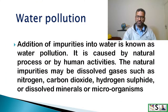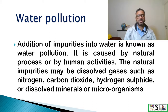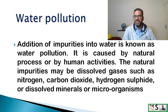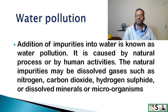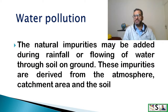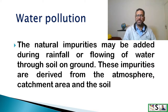Water pollution. First, we will discuss water pollution and then the hazards of pollution that result in waterborne diseases. Addition of impurities into water is known as water pollution. It is caused by natural processes or by human activities. Natural impurities may be dissolved gases such as nitrogen, carbon dioxide, hydrogen sulfide, or dissolved minerals or microorganisms. These natural impurities may be added during rainfall or the flowing of water through the soil on the ground, and are derived from the atmosphere, catchment area, and the soil.